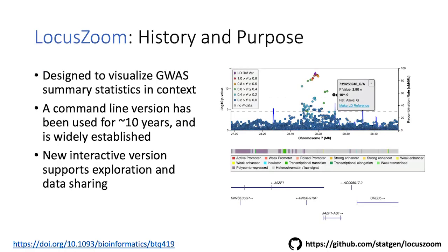LocusZoom itself may look familiar from publications. It's a tool that's been around for more than 10 years, widely established as a way to show GWAS summary statistics in the biological context of a region. Recently we've been working on a new interactive version, so you're no longer limited in data sharing to the handful of static snapshots you can publish in a paper. This is an embeddable LocusZoom.js widget.